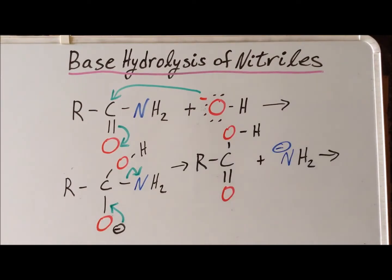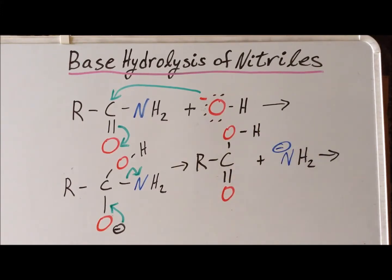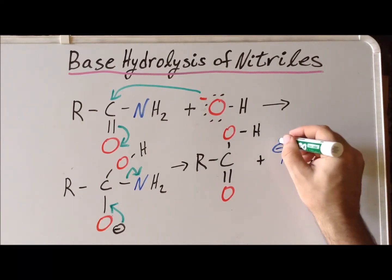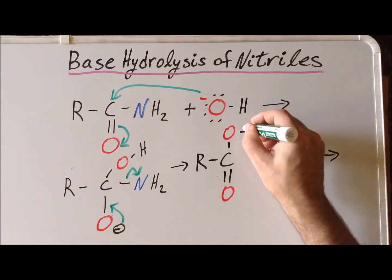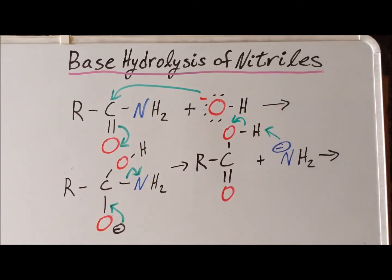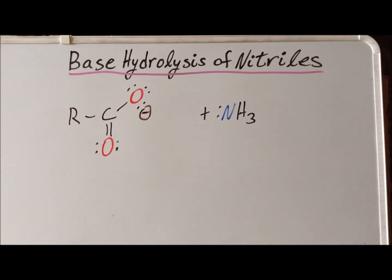Next, the strongly basic amide ion is going to abstract the highly acidic carboxylic acid hydrogen from the species. We get rupture of the hydrogen-oxygen bond with the lone pair going to oxygen, and in the process we form the carboxylate — the carboxylic acid anion, the conjugate base of the carboxylic acid. As a result, our final product of the base hydrolysis of nitriles is the carboxylate anion.